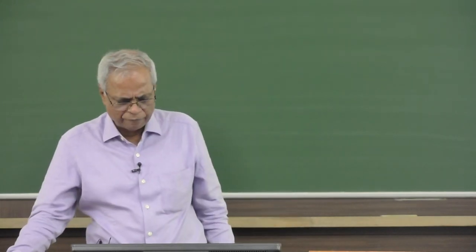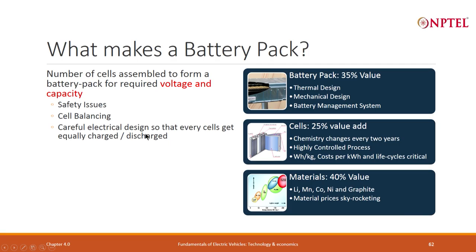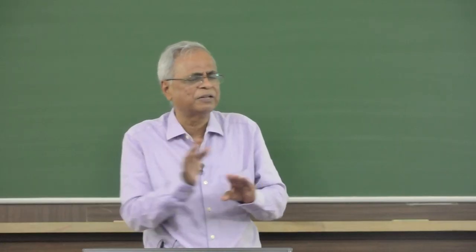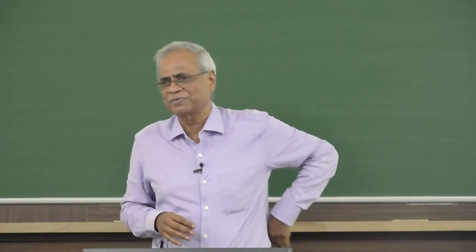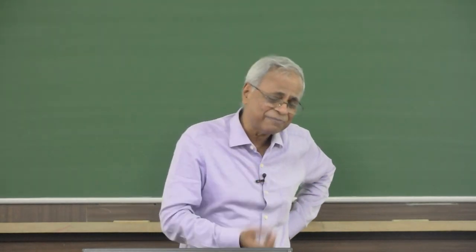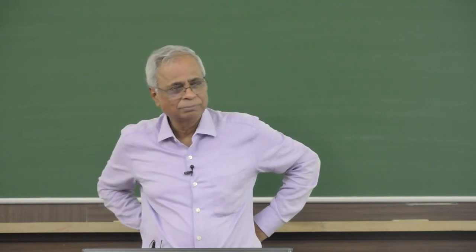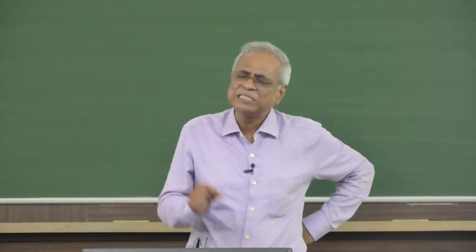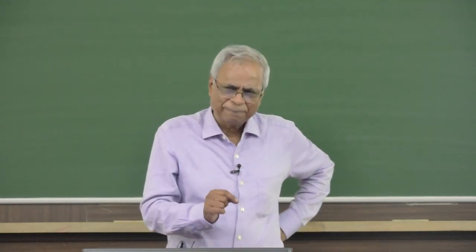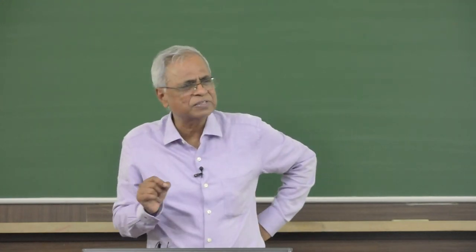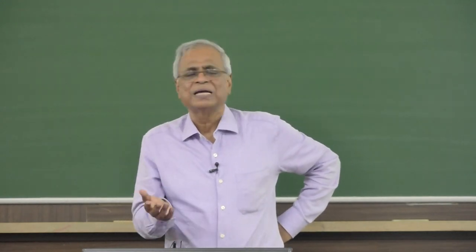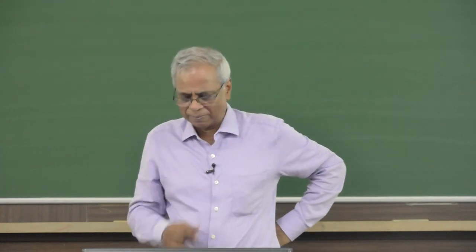You need to do a very careful electrical design so that every cell is equally getting charged or discharged. Cell balancing can correct for a small difference; it cannot correct for large differences. The pack itself has to be designed so that nearly the same current will flow, but if there is imbalance due to changes in internal resistance, that correction can be done by cell balancing.